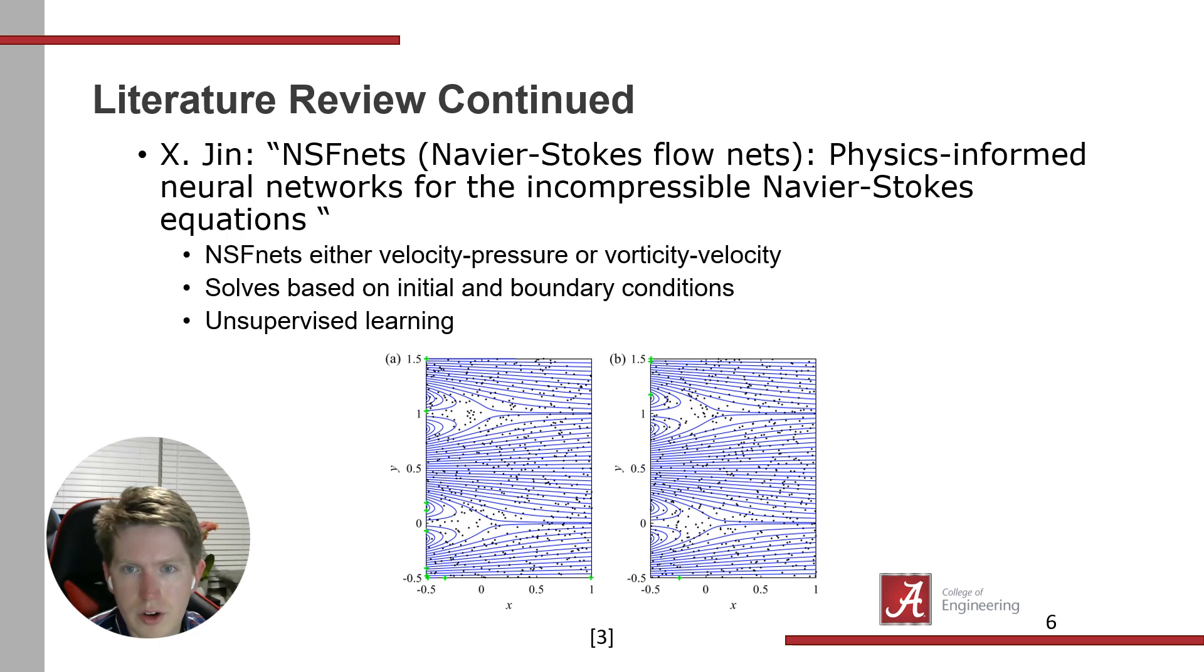Next is Jin's work on Navier-Stokes flow nets, a more advanced version. They only need initial and boundary conditions to solve for everything. There are two modes: velocity-pressure or vorticity-velocity outputs. You'd use vorticity-velocity when expecting more rotational flow. Through unsupervised learning, the black dots show initial positions and green dots show boundary conditions—all that was needed to generate those flow lines at subsequent time intervals.